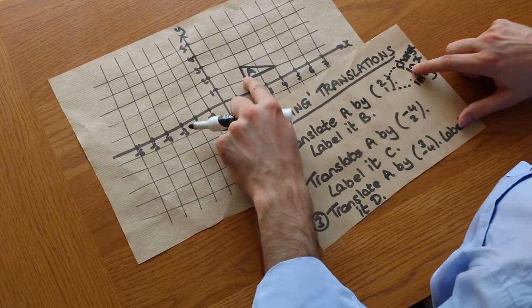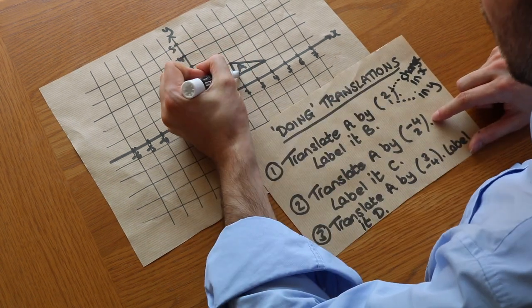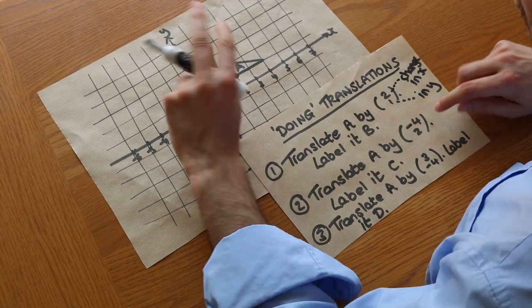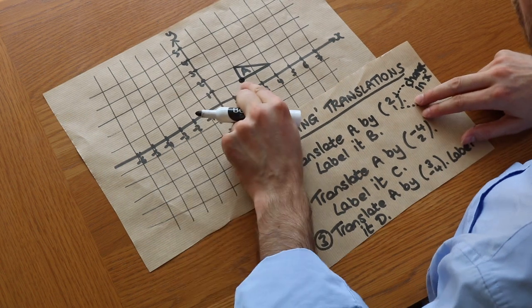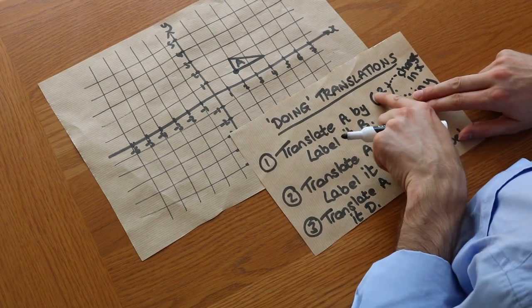So we've got the shape A here and we want to translate that shape by (2, 1). So let's just take a particular point on A, doesn't matter as long as we're consistent, we're going to choose that right angle here and we want to first translate that point by (2, 1).